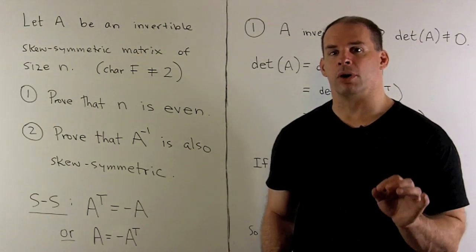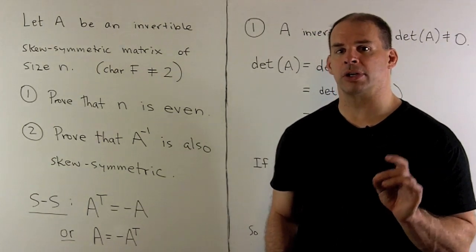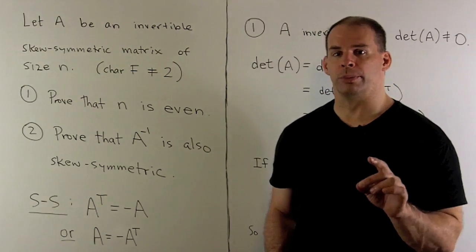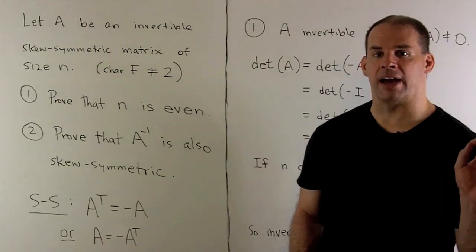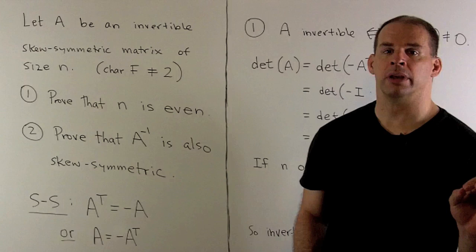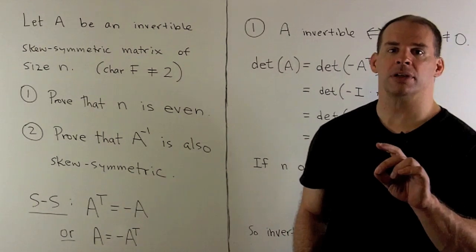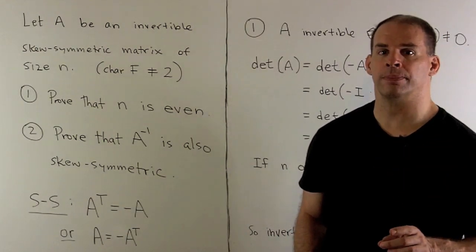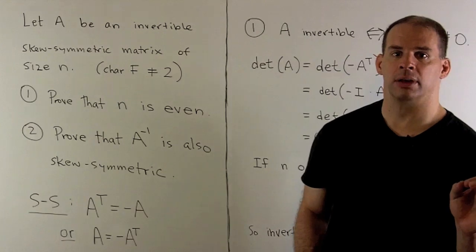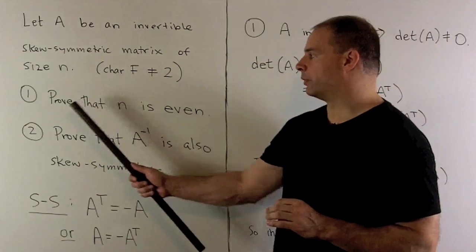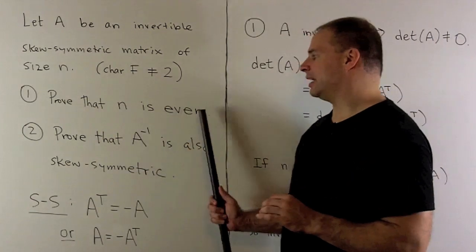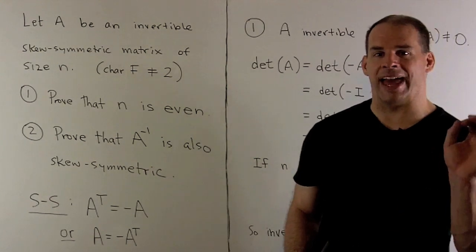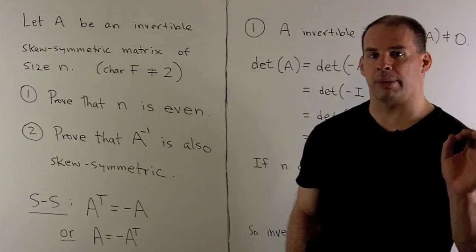Let A be an invertible skew-symmetric matrix of size N. We'll assume the field we're working in does not have characteristic equal to 2 — just pretend we're in the real or complex numbers. I want to show two things: first, I want to prove that N is even, and then we want to show that A inverse is also skew-symmetric.